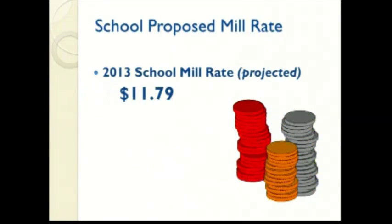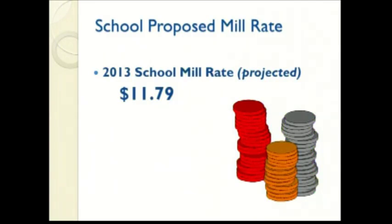The school tax rate projected at this time for next year is $11.79 per $1,000 of property value. This is the fair market value as listed on your property tax bill and not the assessed value. The assessed value changes very infrequently — only when you've been reassessed. But the fair market value changes almost annually as the Wisconsin Department of Revenue studies the sales of homes in communities and compares those sales figures to the actual assessed value.